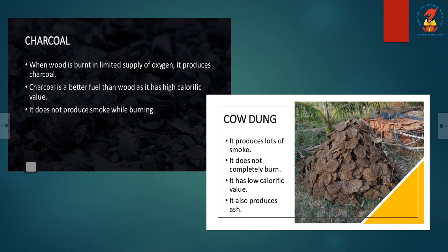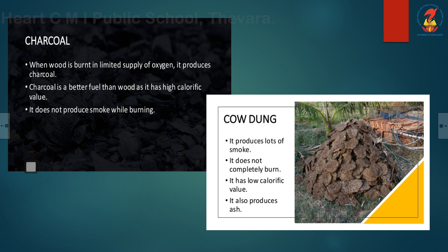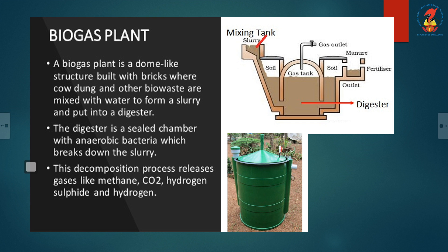What are the advantages of charcoal? Charcoal has a high calorific value compared to wood. It does not produce smoke while burning. It is easy to store and transport. In contrast, when cow dung cake is burned, it produces lots of smoke, does not burn completely, has a low calorific value, and produces ash. In a biogas plant, we can convert animal dung into the most efficient fuel — biogas.